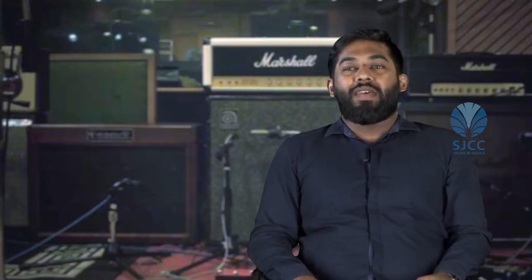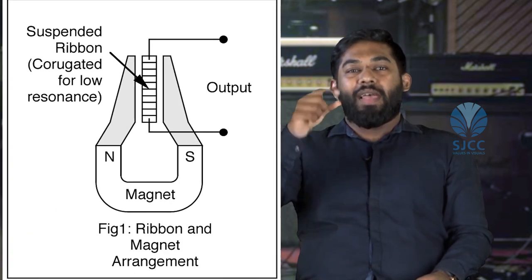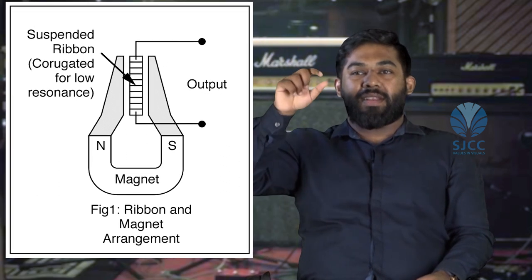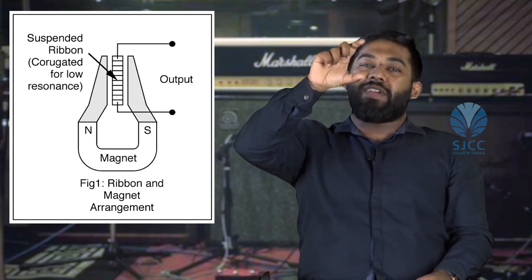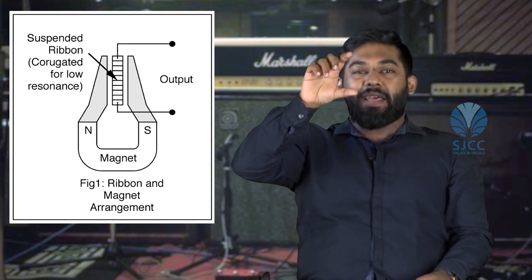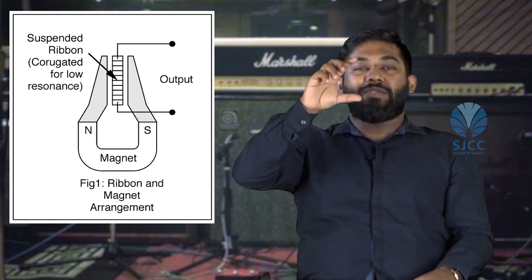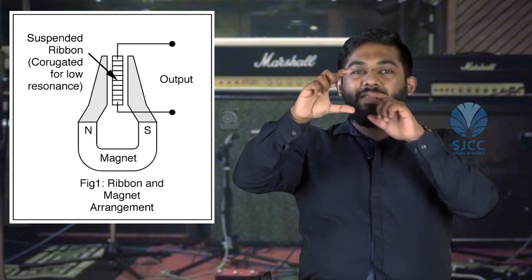Ribbon microphones have two parts: a thin metal strip, also known as the ribbon, and a U-shaped magnet called a horseshoe magnet. The ribbon is suspended in the magnetic field of the horseshoe magnet. Same as in dynamic mics, when acoustical energy hits the ribbon, it vibrates. From electromagnetic induction, when a conductor moves in a magnetic field, a current is induced in it — that is how we get a signal in a ribbon microphone. Here are some examples of ribbon microphones.